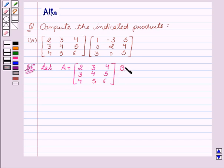And B equal to matrix 1, minus 3, 5, 0, 2, 4, 3, 0, 5.